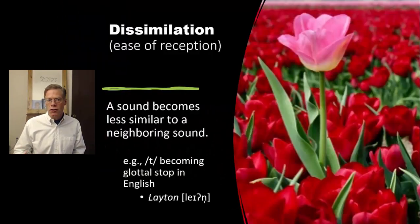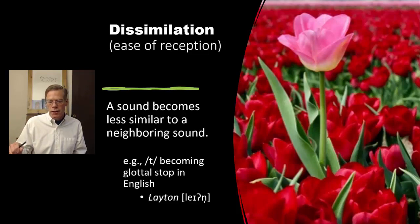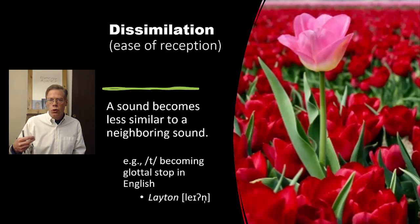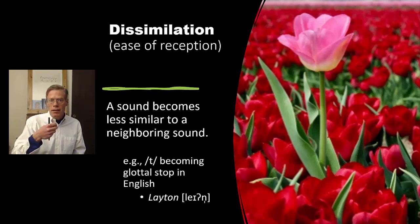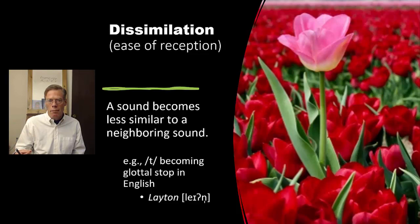Another process that's sort of the inverse of assimilation — and probably slightly less common — is dissimilation, which is an ease of reception process because it makes it easier on the hearer. For example, when you've got a T coming right before an N sound, you're going to get a glottal stop instead of a T sound. The name of the town north of me is 'Leighton' — it's a glottal sound. The N that comes right after is alveolar, so the T can get lost, and it makes it easier for the hearer if it turns into a glottal stop: 'Leighton'.